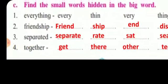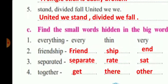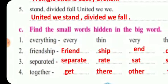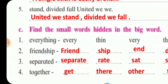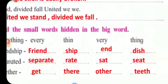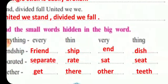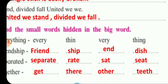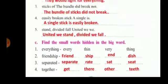Now the next word is 'together.' The smaller words are G-E-T 'get,' T-H-E-R-E 'there,' O-T-H-E-R 'other,' and T-E-E-T-H 'teeth.' These are the small words hidden in the bigger word.